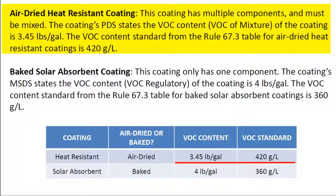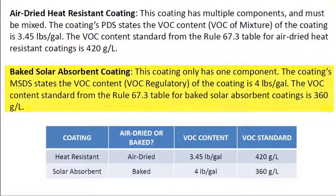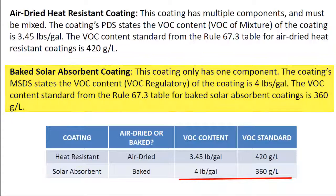The VOC content standard from the rule for air-dried heat-resistant coatings is 420 grams per liter. The baked solar absorbent coating has only one component. The coating's MSDS states the VOC regulatory of the coating is 4 pounds per gallon.